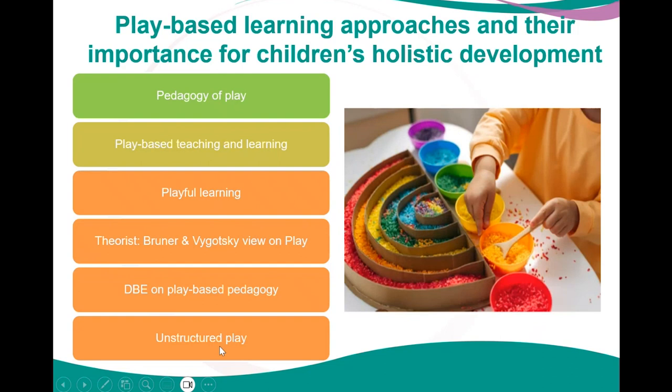In unstructured play, children have agency and control over the experience. Play should involve some degree of agency, enabling children to take an active role and ownership in their experiences by choosing what they like to do. Agency is when children develop skills in all areas of development — intellectual, social, emotional, and physical — and apply concepts of quantity, science, and movement to real life.